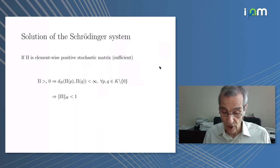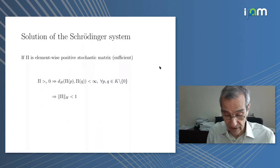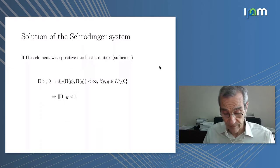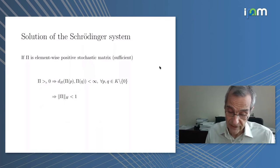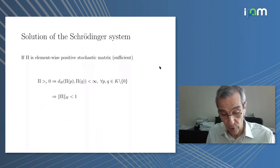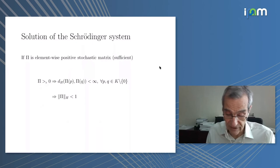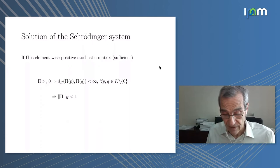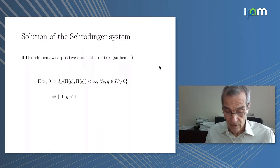The solution of the Schrödinger problem now becomes trivial provided you can ensure that the transition probabilities, the matrix of transition probabilities, is strictly contracting. For that you need a little bit of a strong assumption. For example, if you have that this is elementwise positive stochastic matrix, it's a sufficient condition, it's not necessary, you can relax it a bit. That's what I mean by elementwise positive. Then this implies that the diameter of the image is finite and strict contractiveness.